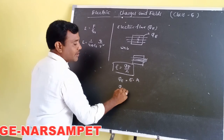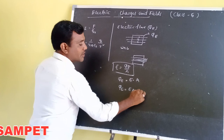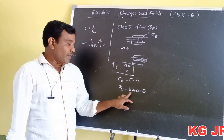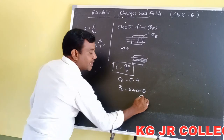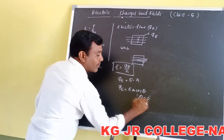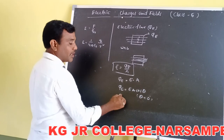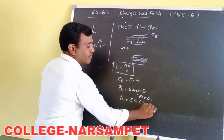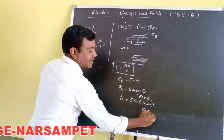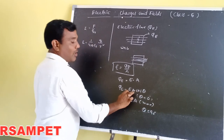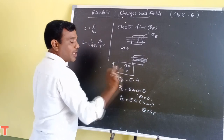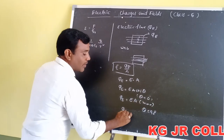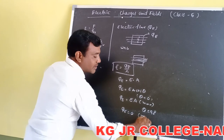Here, theta is the angle between the electric field and the area vector. When θ = 0°, cos 0 = 1, so φ = EA — this is the maximum value. When θ = 90°, the area direction and electric field direction are perpendicular to each other, so cos 90 = 0, and φ = 0 — this is the minimum.